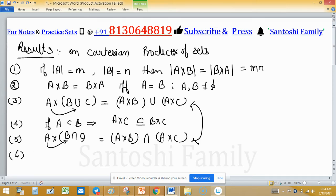Result 6 is: A cross B intersection C cross D. This will equal to A intersection C cross B intersection D.